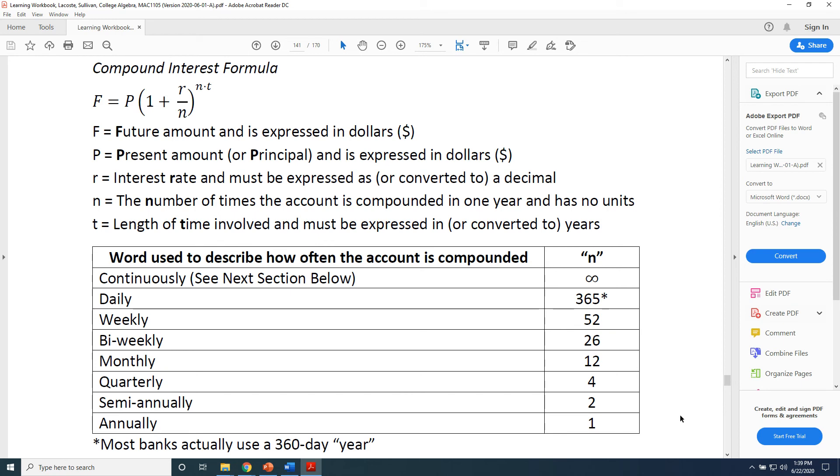Now, in the real world, many banks actually use a 360-day year. And so if they are claiming that they are going to compound your account daily, you may find that they're using the number 360 instead of 365. There are reasons why this might be so, but they're a little bit beyond the scope of this particular video.